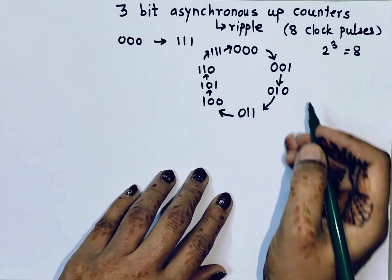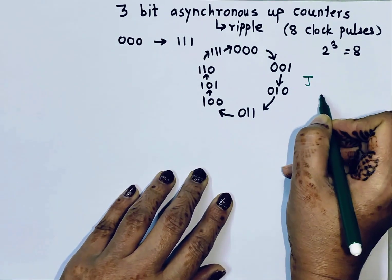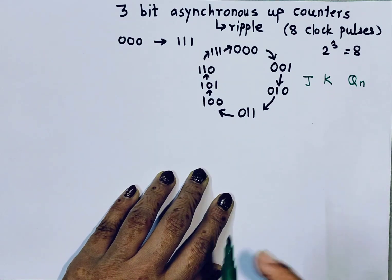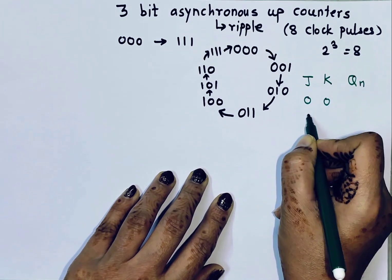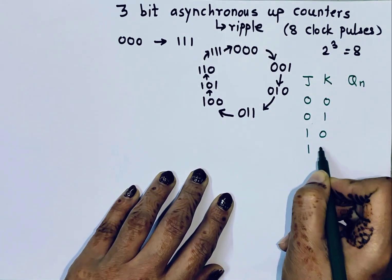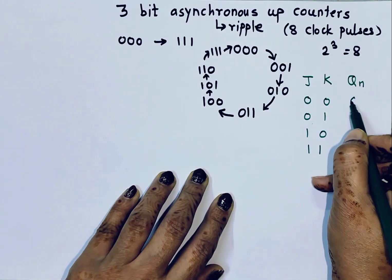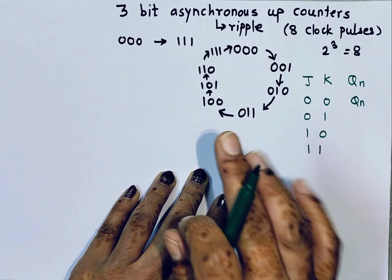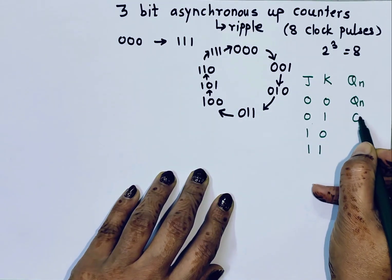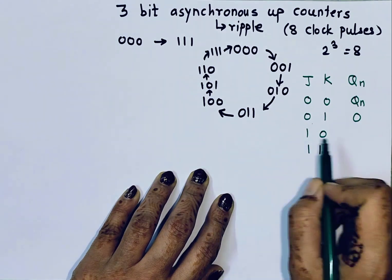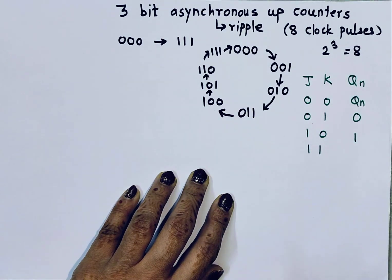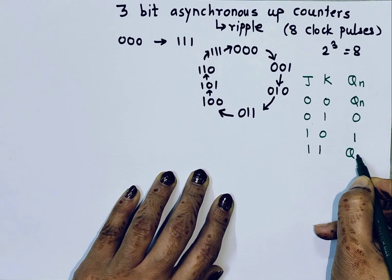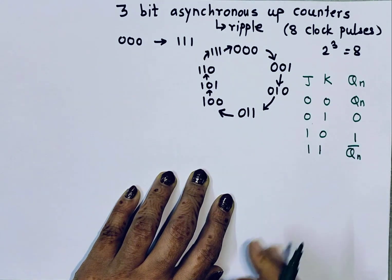JK stands for Jack Kilby. It has 2 inputs, J and K, and outputs Qn and Qn-bar. Inputs can be 0 0, 0 1, 1 0, or 1 1. For 0 0, the output remains the same as the previous output. For 0 1, the output resets to 0. For 1 0, it sets the output to 1. When both inputs are 1, the next output is the complement of the previous state — that is, the output toggles.